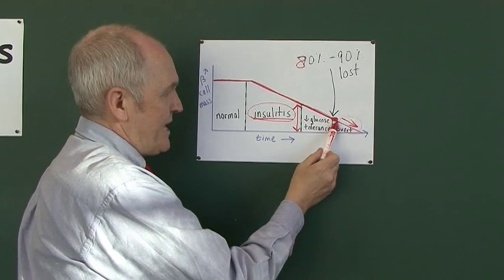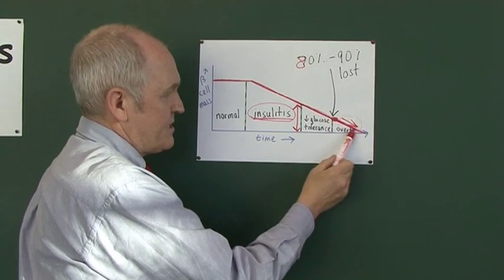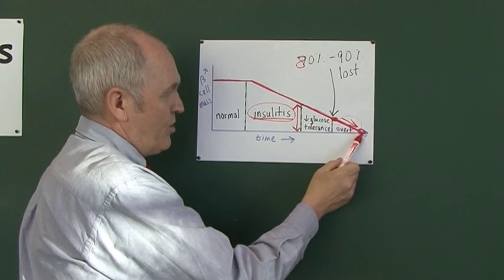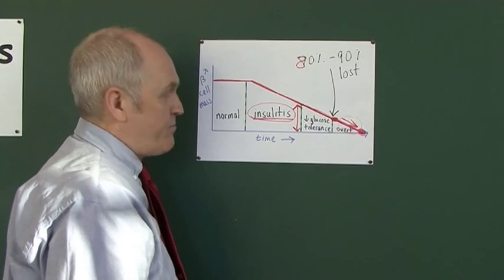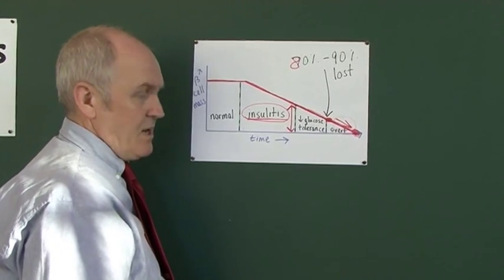And then they go down and down and down, until in type 1 diabetes, basically, all of the beta cells are lost, generating a complete insulin-dependent diabetes mellitus.